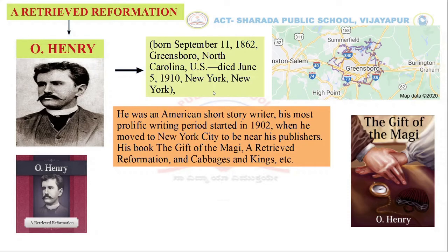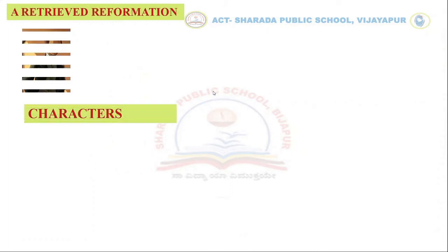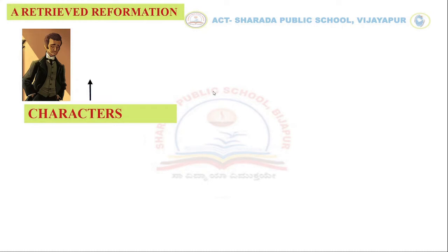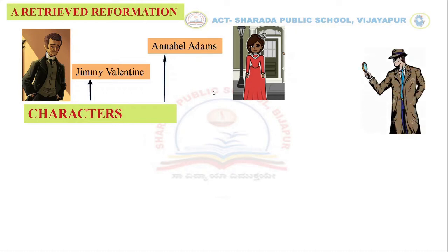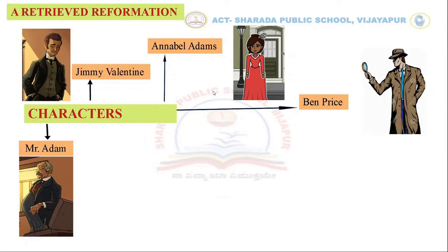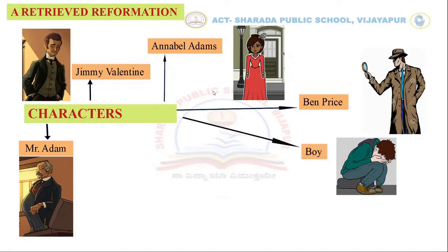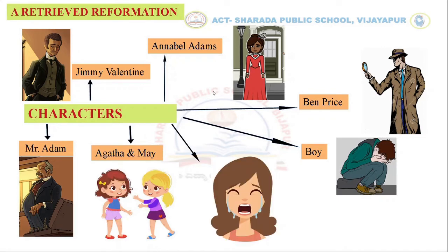'A Retrieved Reformation' is one of the thriller novels. There are eight main characters throughout this lesson. The story starts where Mr. Jimmy walked out of the prison. Annabelle Adams is a character Jimmy met in Elmo City. Ben Price is a detective who wants to arrest Jimmy. Mr. Adam is Annabelle's father, and there is also a boy who helped Jimmy gather information about Annabelle. Agatha and May are Annabelle's nieces.